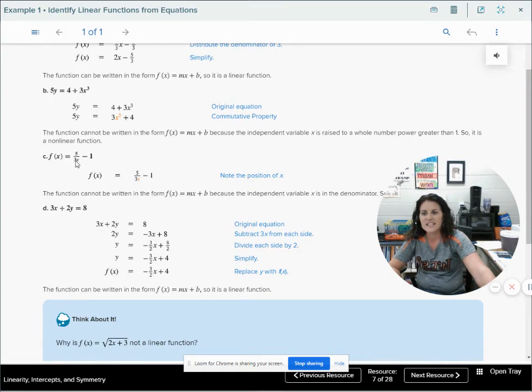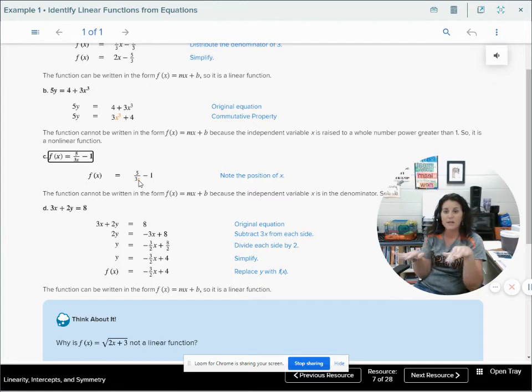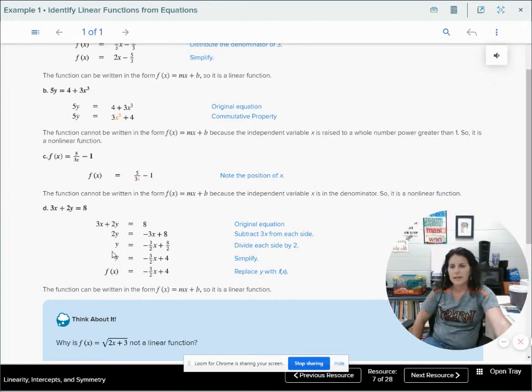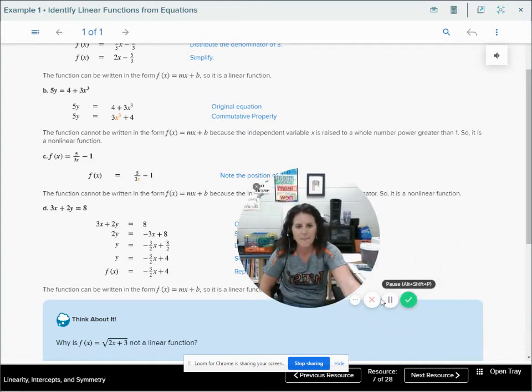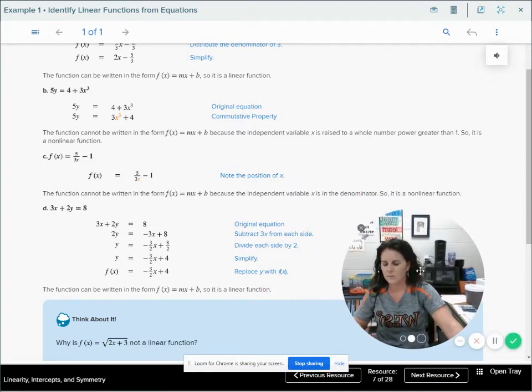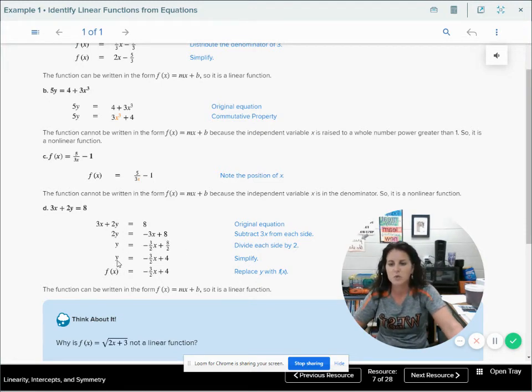Looking at this, I see x is in the denominator, because the x is in the bottom of the problem. We know that it has a negative exponent, therefore the exponent is not 1, so it is nonlinear. Looking at this one, this is a linear function. I can rearrange it so that it's in the form y equals mx plus b. This one can be rewritten in the form y equals mx plus b by subtracting 3x from each side and dividing everything by 2 to get y all by itself. Therefore, it is a linear function.